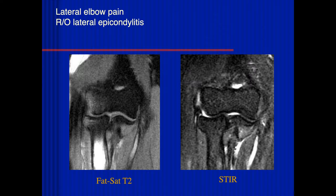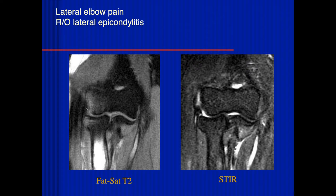There's no signal on the STIR, so that's just incomplete fat saturation. This is due to magnetic field inhomogeneity — there's suppression of the water signal and lack of suppression of the fat signal in those areas, all due to magnetic field inhomogeneity from the coil. Notice that here is a tear of the origin of the extensor carpi radialis brevis tendon, which was a cause of this patient's symptoms, but you can't see it because of all the artifact. If you see this kind of situation, especially in an area where you're suspecting pathology, you have to do additional sequences to get rid of the artifact.